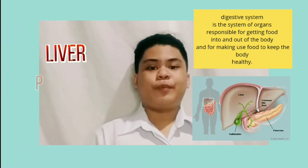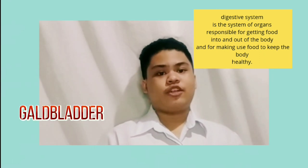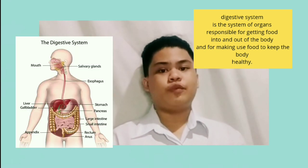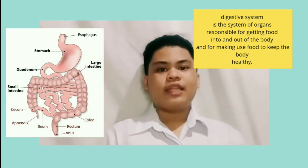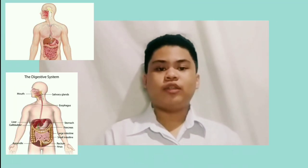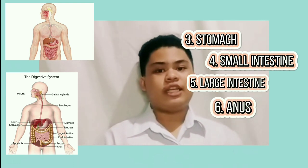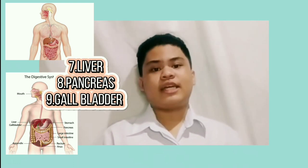The digestive system is made of the gastrointestinal tract, also called the GI tract, and the liver, pancreas, and gallbladder. The GI tract is a series of hollow organs joined along a long twisting tube from the mouth to the anus. The hollow organs that make up the GI tract are the mouth, esophagus, stomach, small intestine, large intestine, and anus.